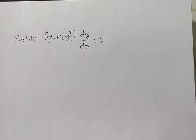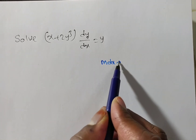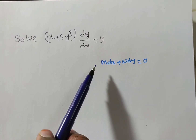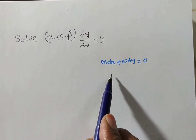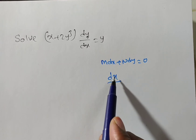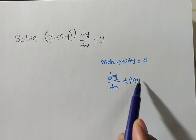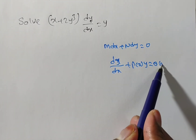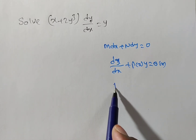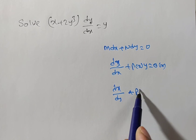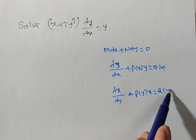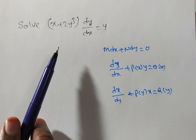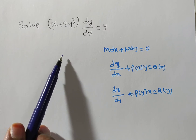Which method do we apply? We can go for the M dx + N dy = 0 form and convert into that form. We also have the linear differential equation form: dy/dx + P(x)·y = Q(x), or alternatively dx/dy + P(y)·x = Q(y). Sometimes differential equation problems can be done in different methods, so I will try to solve this problem in different methods.